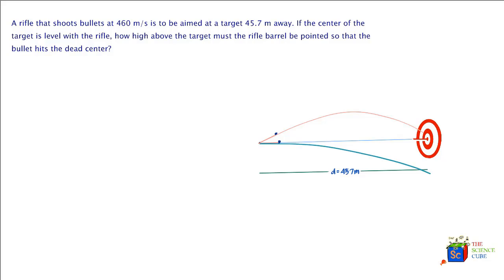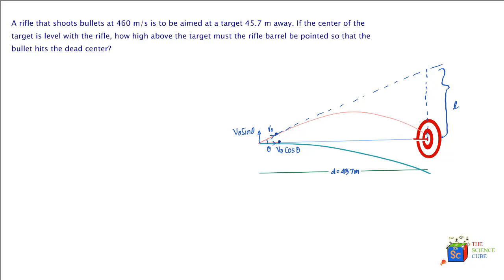Let's say this is our angle theta at which the rifle needs to be raised. Therefore the velocity in this direction, let's call it V naught, which equals 460 meters per second. The velocity in the horizontal direction would be V naught cos theta, and in the vertical direction it will be V naught sin theta. We can deal with this problem the way we deal with most projectile motion problems — horizontal and vertical motion are independent of each other, provided there's no wind or air resistance.